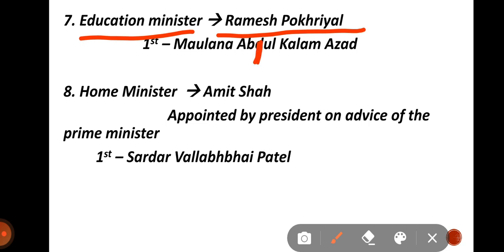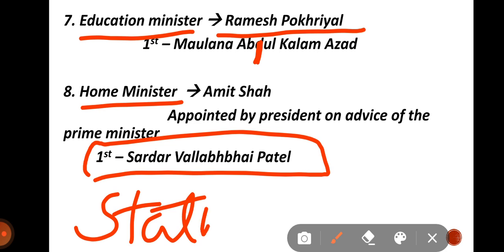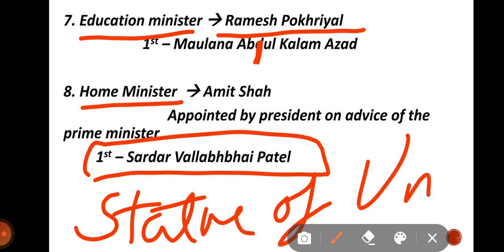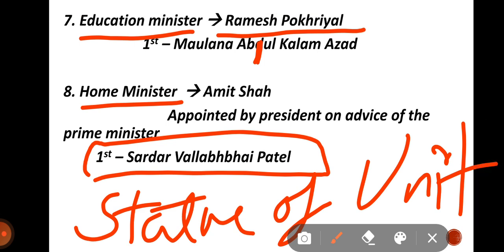The first Education Minister was Abul Kalam Azad. Next is the Home Minister. The current Home Minister — and in relation to this, the Statue of Unity — the Statue of Unity is located in Gujarat.